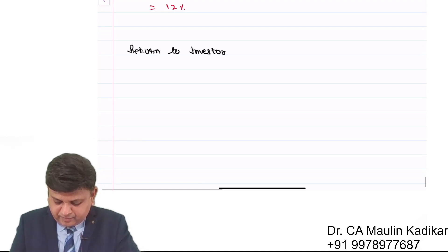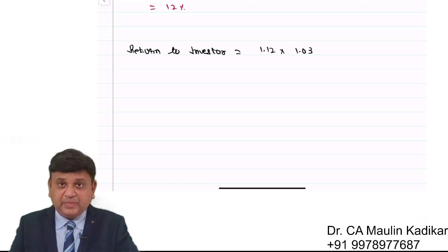So, return to investor is equal to 1.12 into 1.03 minus 1 into 100.